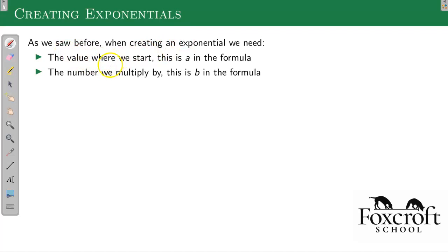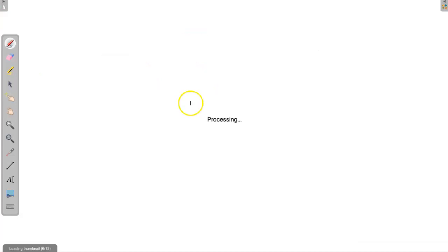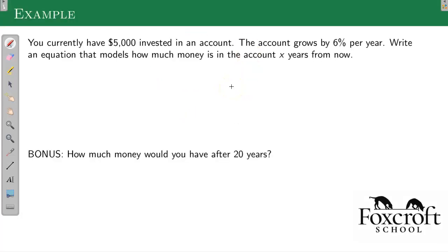So remember when we're creating an exponential, we need to know where the value starts. That's A in our formula, A times B to the X, and the thing we're multiplying by each step is B. You currently have $5,000 invested in an account. The account grows by 6% per year. Write an equation that models how much money you have in the account. So we know this is, well, I actually haven't told you, but investments and money growing in an account is exponential because the more you have, the more it grows. It's not the exact same thing you're adding every single time. So this is exponential.